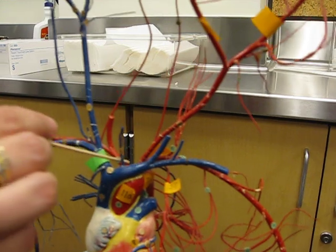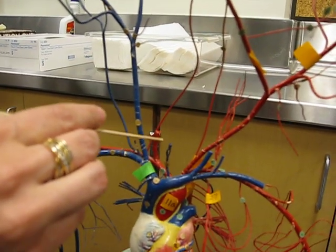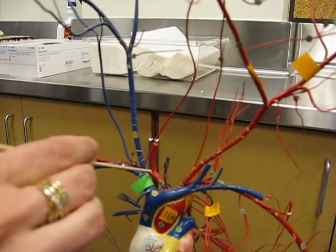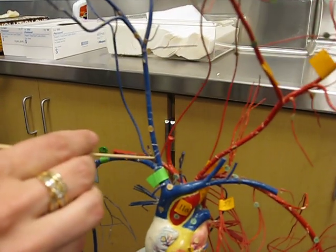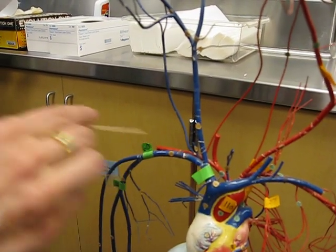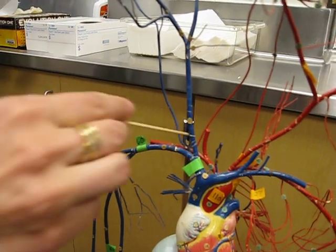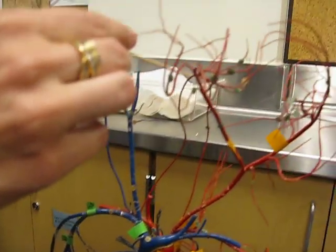It's back there. Okay, the brachiocephalic splits into the right common carotid and the right subclavian. The right subclavian then goes on to form the right axillary, which you can't see but it would be down here, and the vertebral which goes up to the brain.